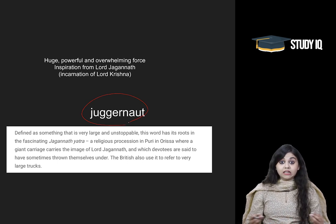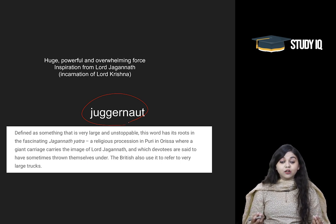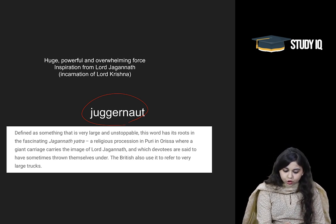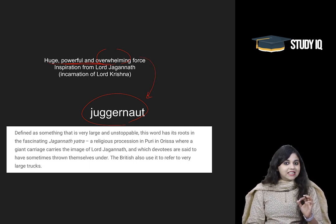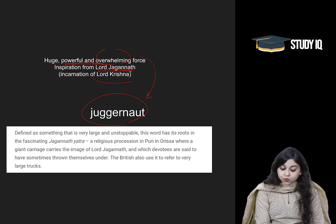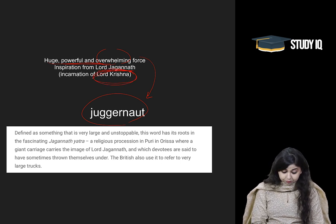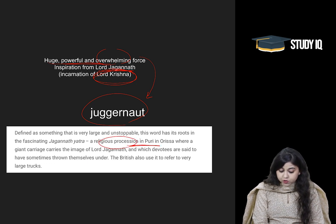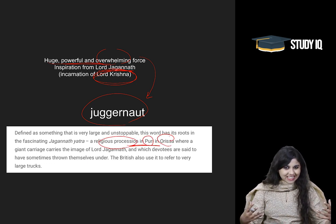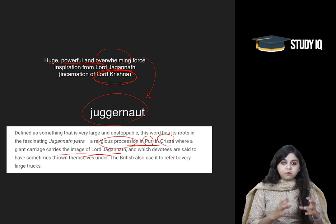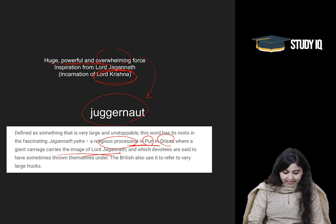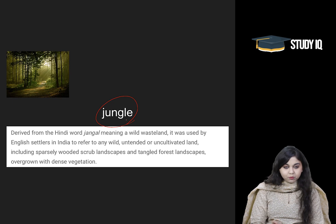Juggernaut is a word particularly used before elections — for example, 'the Modi Juggernaut'. It means an overwhelming power or force. This comes from Lord Jagannath, who was considered an incarnation of Lord Krishna. There is a religious procession in Puri, Odisha, where a giant carriage carries the image of Lord Jagannath. So, Juggernaut is also an important word in English taken from Hindi.